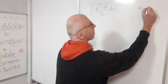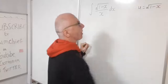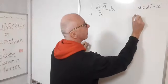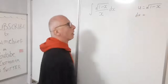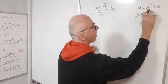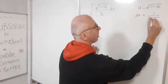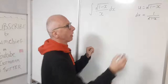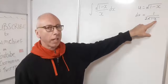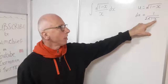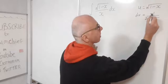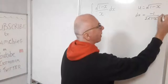So u equals square root of 1 minus x. Taking the derivative: du equals 1 over the square root of 1 minus x, and then with the chain rule we take the derivative of the inside, which is minus 1. So we need a minus sign in the numerator, giving du equals negative 1 over the square root of 1 minus x dx.